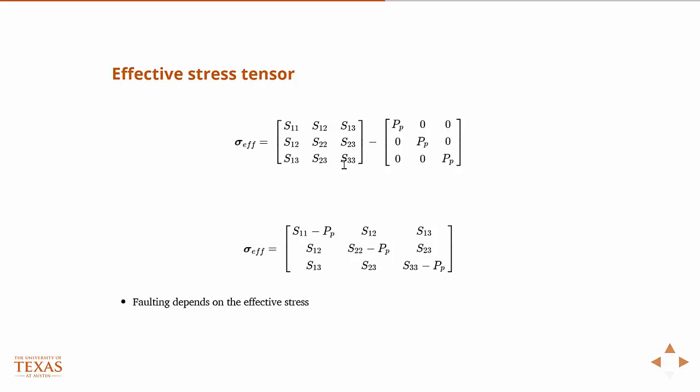The stresses associated with the normal direction are on the diagonal of any stress tensor. And so we just take our normal stress tensor, and we subtract the pore pressure times the identity matrix. Everybody sees this is just P, pore pressure times the identity matrix. And that gives us the effective stress.